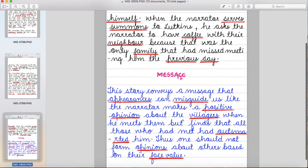Now let's see the message. The story conveys a message that appearances can misguide us like the narrator makes a positive opinion about the villagers when he meets them. Ye story ek message convey karti hai ki logon ki jo face hota hai, appearance hota hai, woh kabhi kabhi hume misguide bhi kar deta hai. Like narrator ne villagers ke liye positive opinion banani chahi thi aur us positive opinion ki wajah se woh chahta tha ki woh waha peh shift bhi ho jaye village mein. But finds that all those who had met them had outsmarted him. Lekin usne kya find kiya? Ki jo jo log usko mile thay, un sabne usko fool kiya. Thus one should not form opinions about others based on their face value. Isi liye logon ko apni opinions nahi banani chahiye logon ko dekh ke.